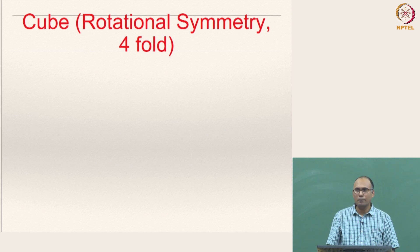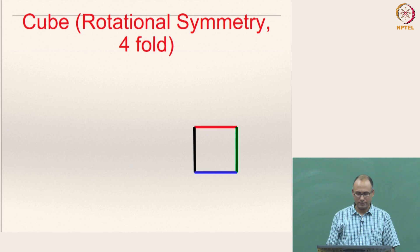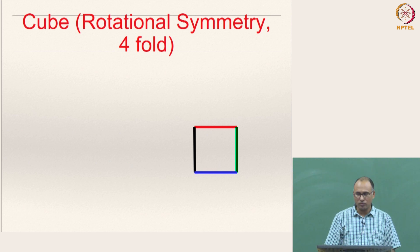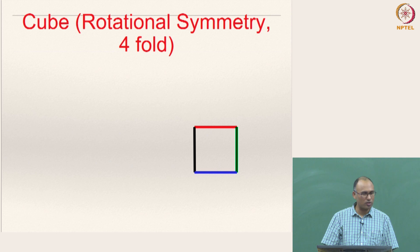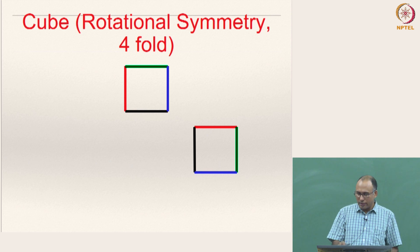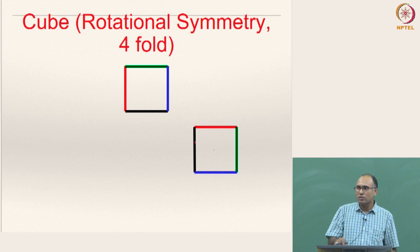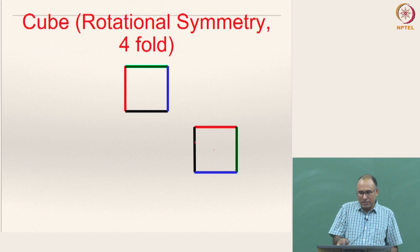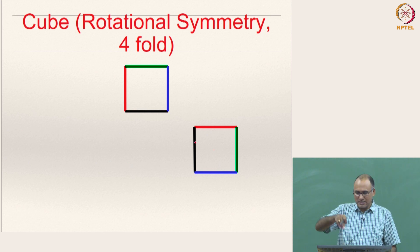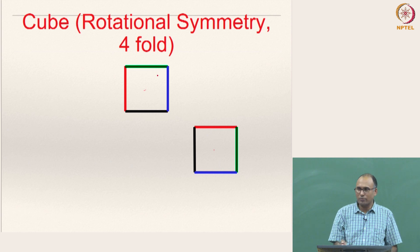I am drawing a cube but we are only looking at the front view. I have identified four sides with different colors so we can track what happens when we rotate. If you rotate this by 90 degrees counterclockwise — here we are rotating in the counterclockwise direction — imagine this is rotated about an out-of-plane axis. I am showing the result separately; I am not translating it, just showing the rotation.